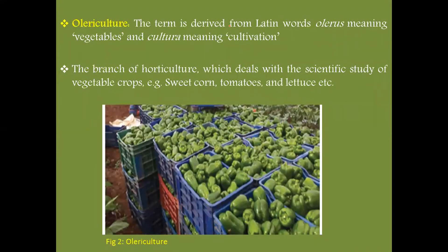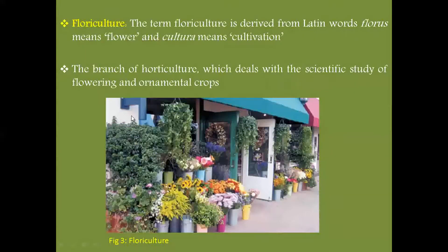Next is olericulture. The term is derived from Latin words: 'olerus,' meaning vegetables, and 'cultura,' meaning cultivation. So it is the branch of horticulture which deals with the scientific study of vegetable crops. Different vegetable crops, for example sweet corn, tomato, and lettuce, are studied in this field. Figure two shows the harvesting of different vegetables.